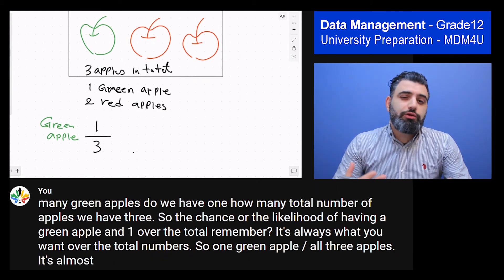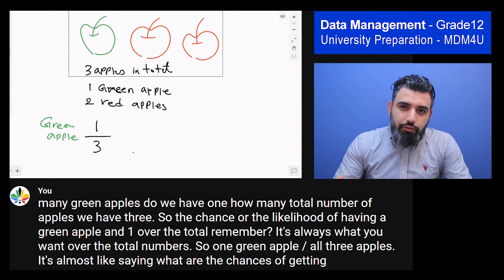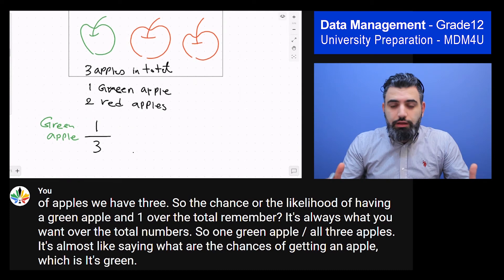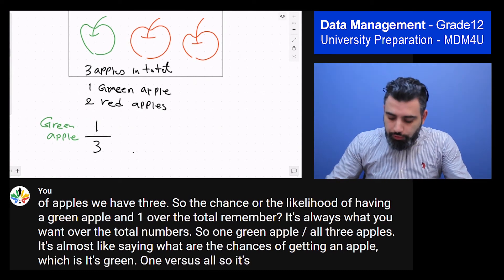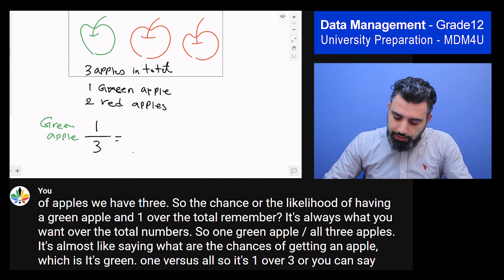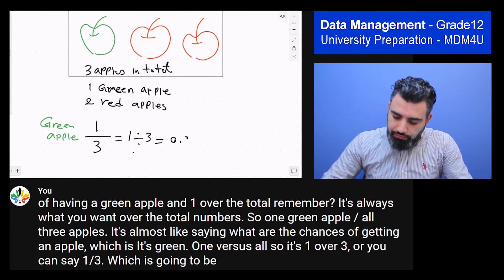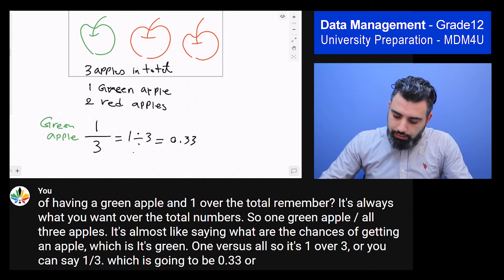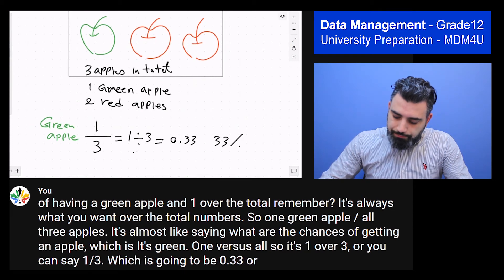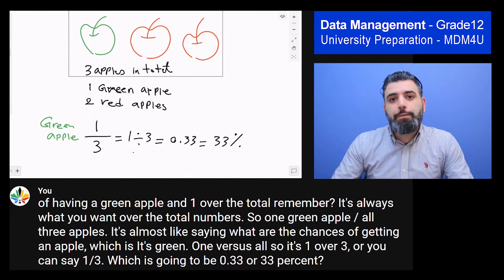It's almost like saying, what are the chances of getting an apple which is green? It's one versus all. So it's one over three, or you can say one divided by three, which is going to be 0.33 or 33%.